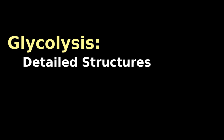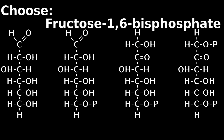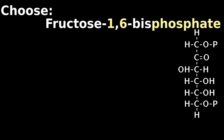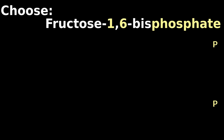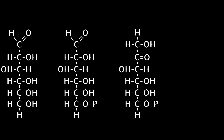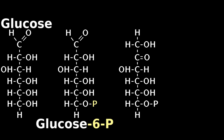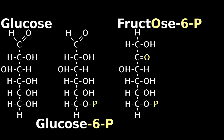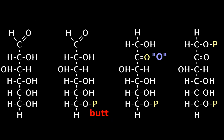Detailed Structures: Which of these is fructose-1,6-bisphosphate? Phosphates on the butt and head make it obvious. You can also guess which is glucose, which is glucose-6-phosphate, and fructose-6-phosphate — butt, o, head.